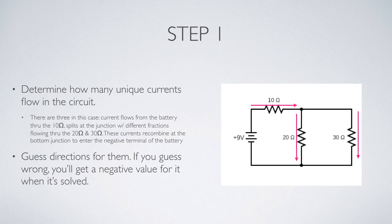I've added arrows in this diagram, and the direction of those arrows are arbitrary. They really can just be guessed. And if you guess wrong, all that will happen is at the end of this process, you'll end up with a negative sign on your answer, and that just tells you to go back and change the direction.